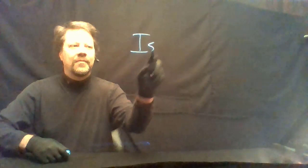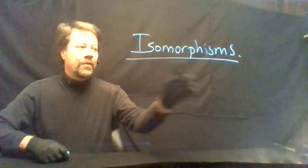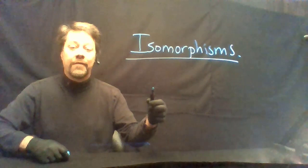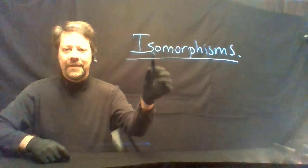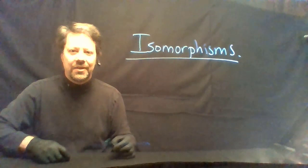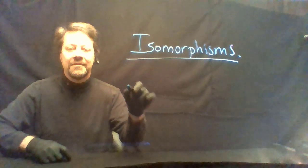Welcome back to Linear Algebra. I'm Dr. Jeff Groh. Today we're going to talk about isomorphisms. There are many kinds of morphisms in mathematics: homomorphisms, homeomorphisms, endomorphisms, automorphisms, and isomorphisms, which give you the exact same structure between objects. There are different kinds of isomorphisms. There are vector space isomorphisms, and that's what we are interested in here.